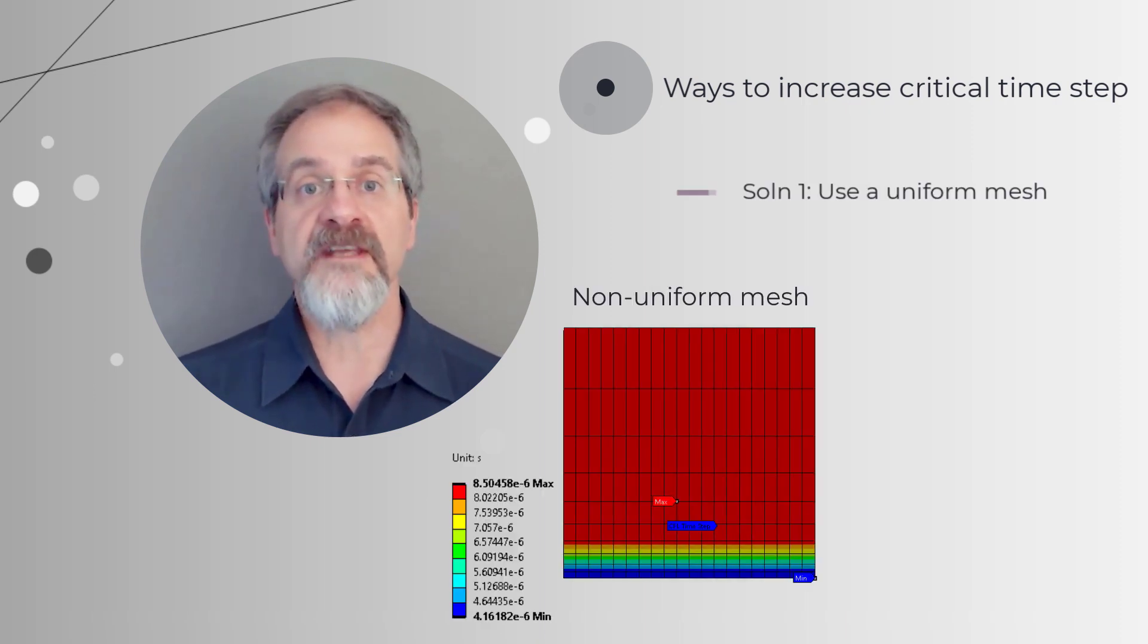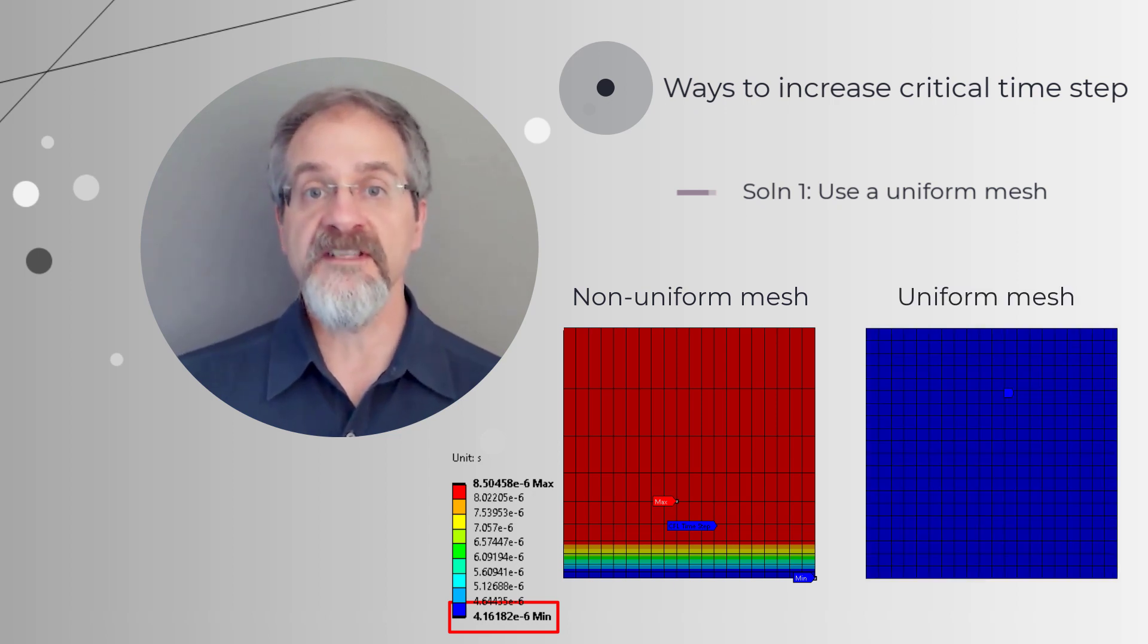As we see from the CFL time step plot, the overall critical time step for the entire model is driven by a few small elements. Using a uniform mesh will ensure that the CFL time step is almost the same throughout.